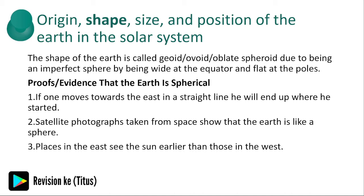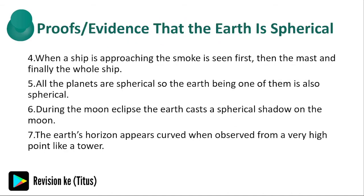One: if one moves around the earth in a straight line, he will end up where he started. Two: satellite photographs taken from space show that the earth is like a sphere. Three: places in the east see the sun earlier than those in the west. Four: when a ship is approaching, the smoke is seen first, then the mast, and then finally the whole ship. Five: all planets are spherical, so the earth being one of them is believed to be also spherical. Six: during a lunar eclipse, the earth casts a spherical shadow on the moon. Seven: the earth's horizon appears curved when observed from a very high point like a tower.